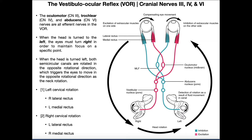This reflex is going to involve cranial nerves 3, 4, and 6. Cranial nerve 3 is the oculomotor nerve, cranial nerve 4 is the trochlear nerve, and cranial nerve 6 is the abducent or abducens nerve. This reflex arc is mainly going to involve the oculomotor nerve and abducens nerve — cranial nerves 3 and 6 — although there will be some contribution from the trochlear nerve depending on which way the head is turned.